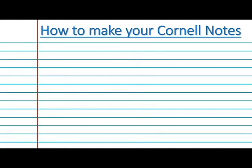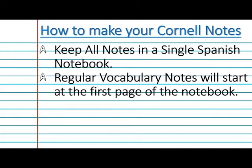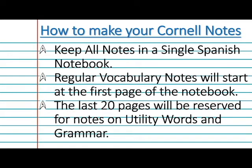First, you'll need a Spanish notebook. You're going to use the Cornell Note System and keep them all together in one notebook for the whole year. We'll put all of your vocabulary notes starting from the first page and go progressively throughout the year — they'll be in order so you can easily find different things when you need to review. You'll use the last 20 pages for a special section on utility words and grammar. Utility words are helpful, handy words that don't fit into any given topic — prepositions, adverbs, conjunctions, things like that. We'll also cover grammatical concepts like how to conjugate verbs and how sentence structure works, so those will be at the end and easy to distinguish from your vocabulary notes. If you don't have a notebook, let me know — I can get one to you.